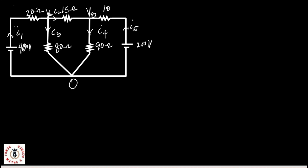Now let's start with node A. At node A, remember we're using nodal analysis — at node A, you can say that my I1 will be equal to I2 plus I3. Remember the sum of the currents leaving the node is equal to the sum of the currents entering the node. Now we'll begin to define our voltage equations for each of the currents.